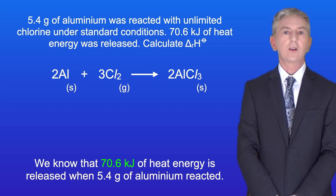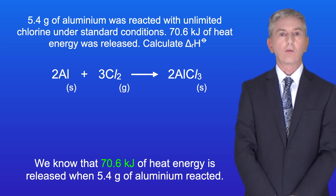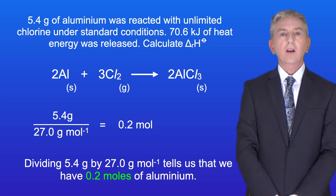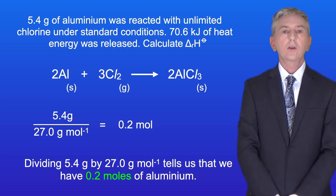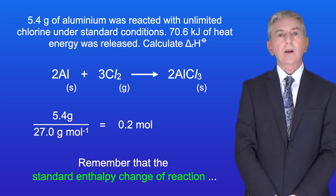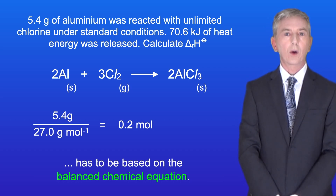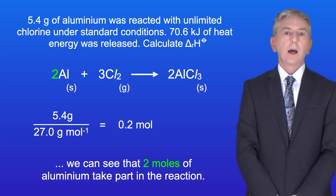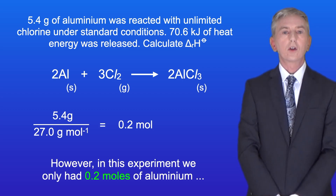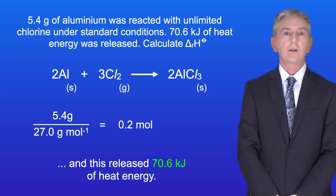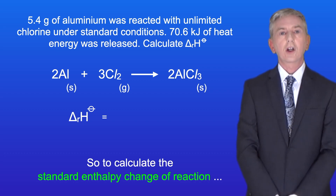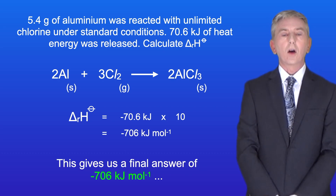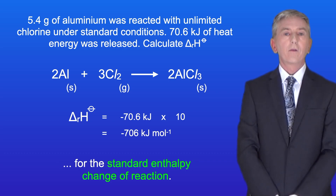We know that 70.6 kilojoules of heat energy is released when 5.4 grams of aluminium reacted. The molar mass of aluminium is 27.0 grams per mole. Dividing 5.4 by 27.0 tells us that we've got 0.2 moles of aluminium. Remember that standard enthalpy change of reaction has to be based on the balanced chemical equation. From the balanced chemical equation, we can see that 2 moles of aluminium take part in the reaction. However, in this experiment we only had 0.2 moles of aluminium, and this released 70.6 kilojoules of heat energy. So to calculate the standard enthalpy change of reaction, we need to multiply minus 70.6 kilojoules by 10. This gives us a final answer of minus 706 kilojoules per mole for the standard enthalpy change of reaction. The minus sign tells us that this reaction is exothermic.